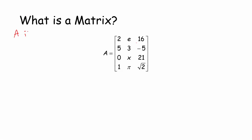Matrix A is a four by three matrix, meaning it has four rows and three columns. Four by three gives you a sense of how many entries there are — four rows and three columns means twelve entries in the matrix.